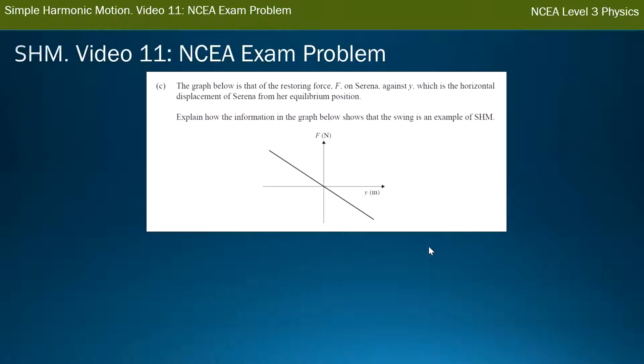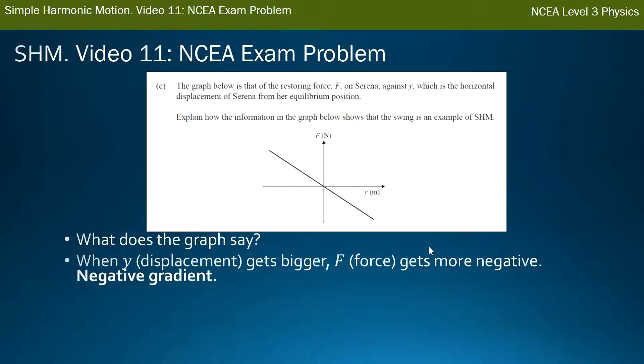Alright, C gives us a graph. It says the graph below shows the restoring force F on Serena against Y, which is the horizontal displacement of Serena from her equilibrium position. Explain how the information in the graph shows that the swing is an example of simple harmonic motion. So just as a reminder, restoring force is a fancy word for total force in a simple harmonic motion system. So first of all, what does this graph say? When I look at this graph myself, what do I see out of it? Well, I see that when Y gets bigger, so when Y goes to the right, I notice that the force gets more negative. Okay, this has a negative gradient. Normally, the graphs I'm familiar with, Y would get, well, something gets bigger, and the other value gets bigger as well, and they're positive gradients. But this is clearly a negative gradient graph.